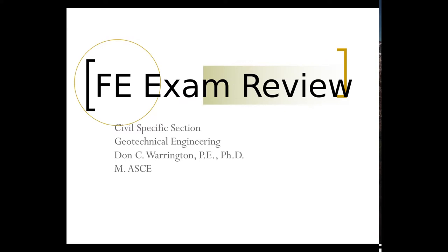The first topic is weight and volume relationships. These are basically driven by two premises. One is that the total weight equals the weight of the solids plus the weight of the water — air is assumed weightless. The other is that the three volumes — the volume of solids, the volume of water, and the volume of air or gas — sum to equal the total volume. You can solve any phase problem based on those two assumptions, but you can get bogged down quickly.